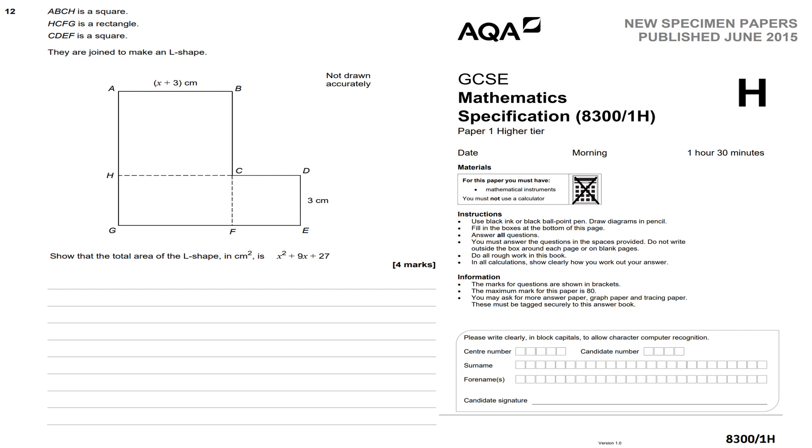Question 12: ABCH is a square, HCFG is a rectangle, CDEF is a square. They are joined to make an L-shape. Show that the total area of the L-shape in centimeters squared is x squared plus 9x plus 27. The key here is to work out the area of this shape - a square, a rectangle, and a square. Let's work out the area of the squares first. The area of ABCF will be (x+3) times (x+3), so we're going to be expanding a pair of double brackets.